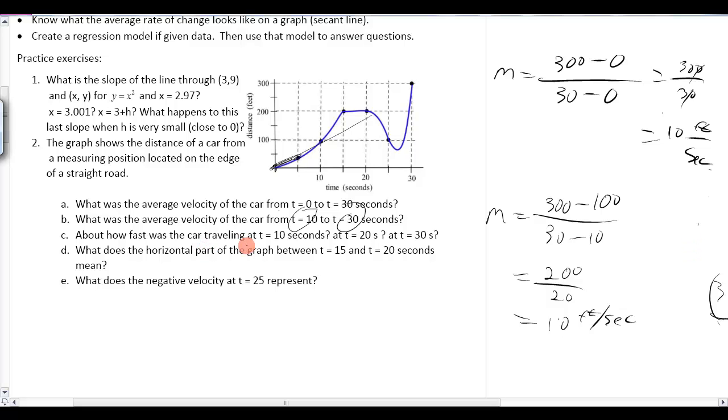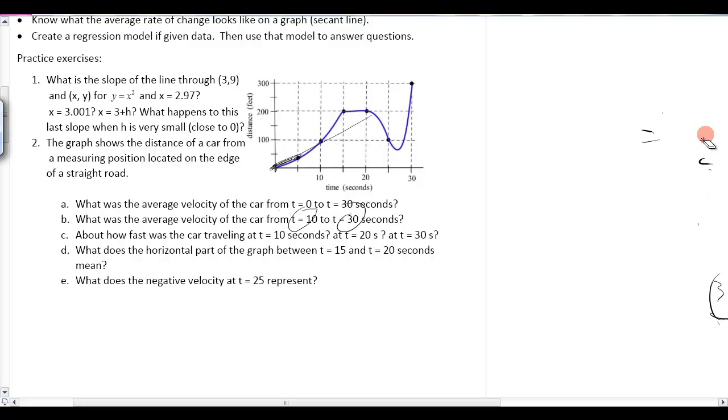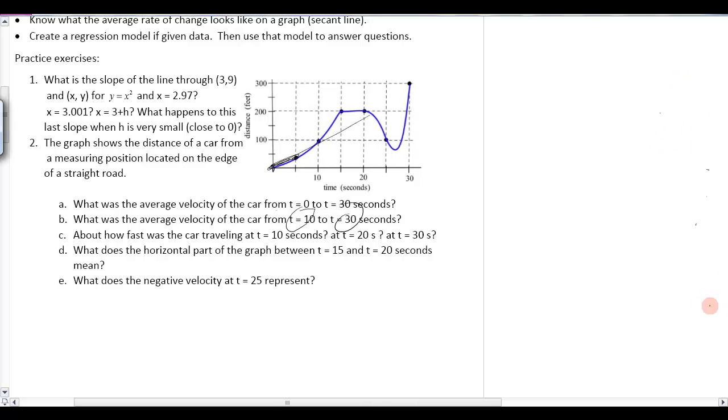So, how fast was the car traveling at t equals 10 seconds? So, now, to figure out how fast it was traveling, are we talking at a particular time, are we talking at average rate of change anymore? No. We're talking instantaneous rate of change. So, how are we going to calculate that? Well, how do we calculate instantaneous rate of change? We could use the derivative, but since we don't know that yet, this is where we went to the tangent line.